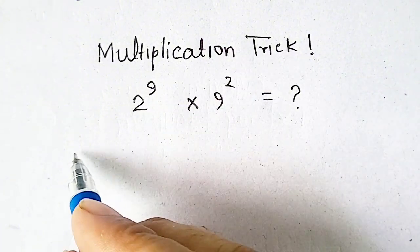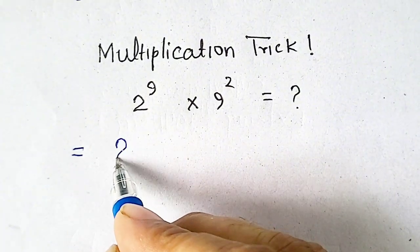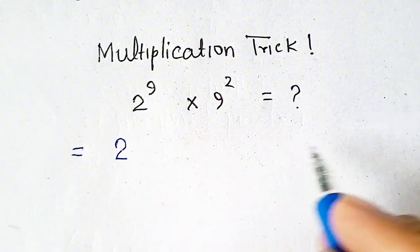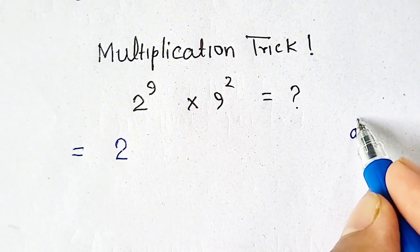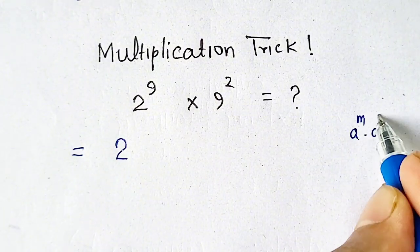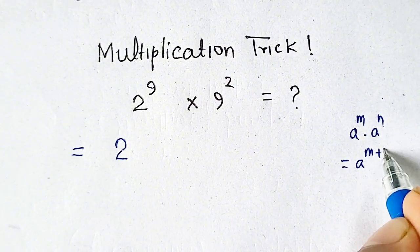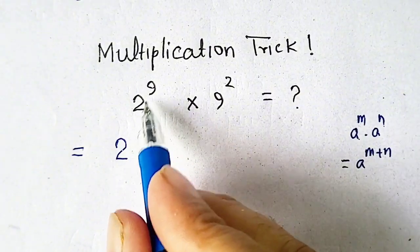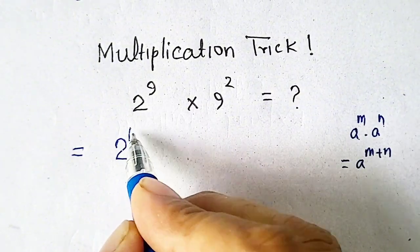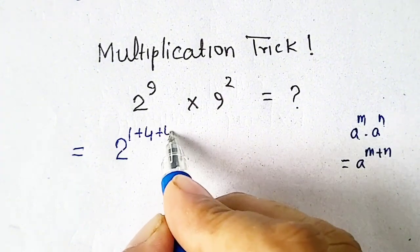We will use a multiplication trick to solve this 2 raised to the power 9. We will split it by using an identity: a power m times a power n equals a power m plus n. So we can write it as 2 power 1 plus 4 plus 4.